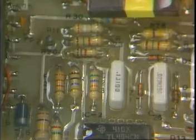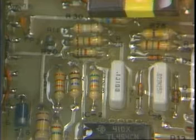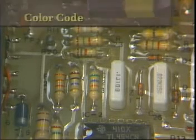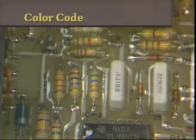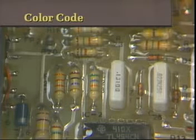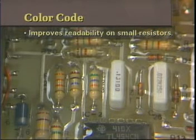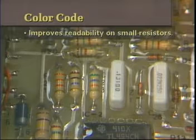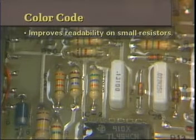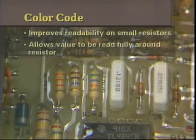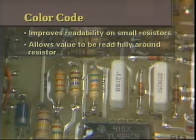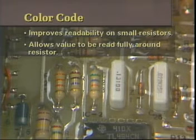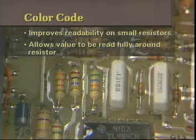The ohmic value of a resistor, its resistance, is most often indicated using a color code system. There are a couple of reasons for this. The value could be printed on the body of the resistor, but some resistors are so small that you probably couldn't read the numbers. A second reason for the color rings is that since they go fully around the resistor's body, the value is visible no matter which way the resistor is mounted.